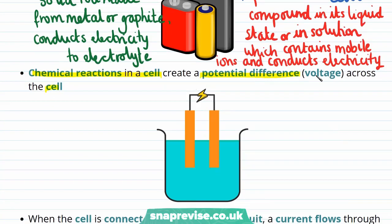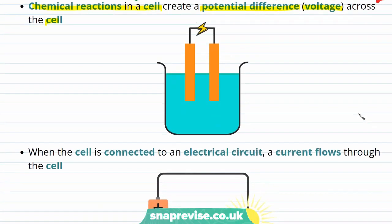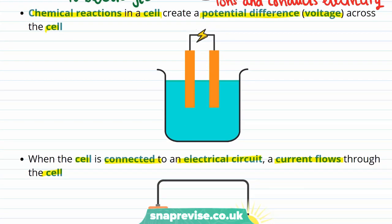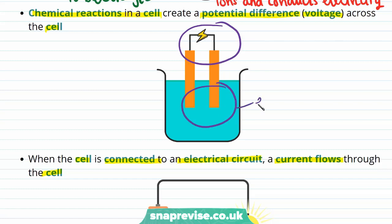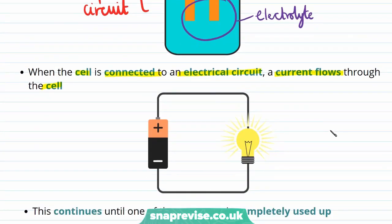A potential difference is just another name for a voltage. If a voltage is set up across the two electrodes and the cell is connected to an external electrical circuit, this potential difference will allow a flow of charge, causing a current to flow through the cell. By connecting the cell to an electrical circuit, we are creating a completed circuit including the external electrical circuit, the two electrodes, and the electrolyte. As the electrolyte conducts electricity, this makes up a complete circuit.